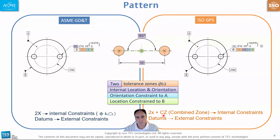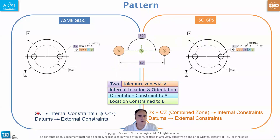Two times plus combined zone in ISO GPS invokes internal constraints, and the datums give only the external constraints. In ASME GD&T, two times invokes internal constraints by default — note: only for position and profile. And datums invoke external constraints.